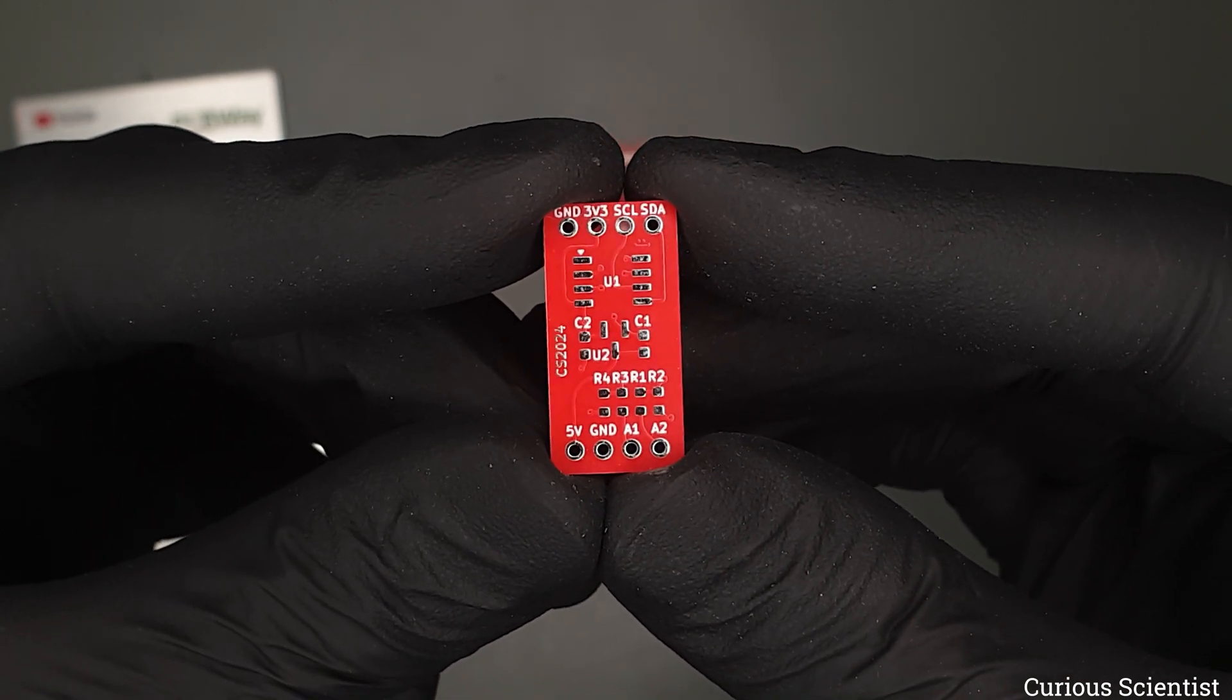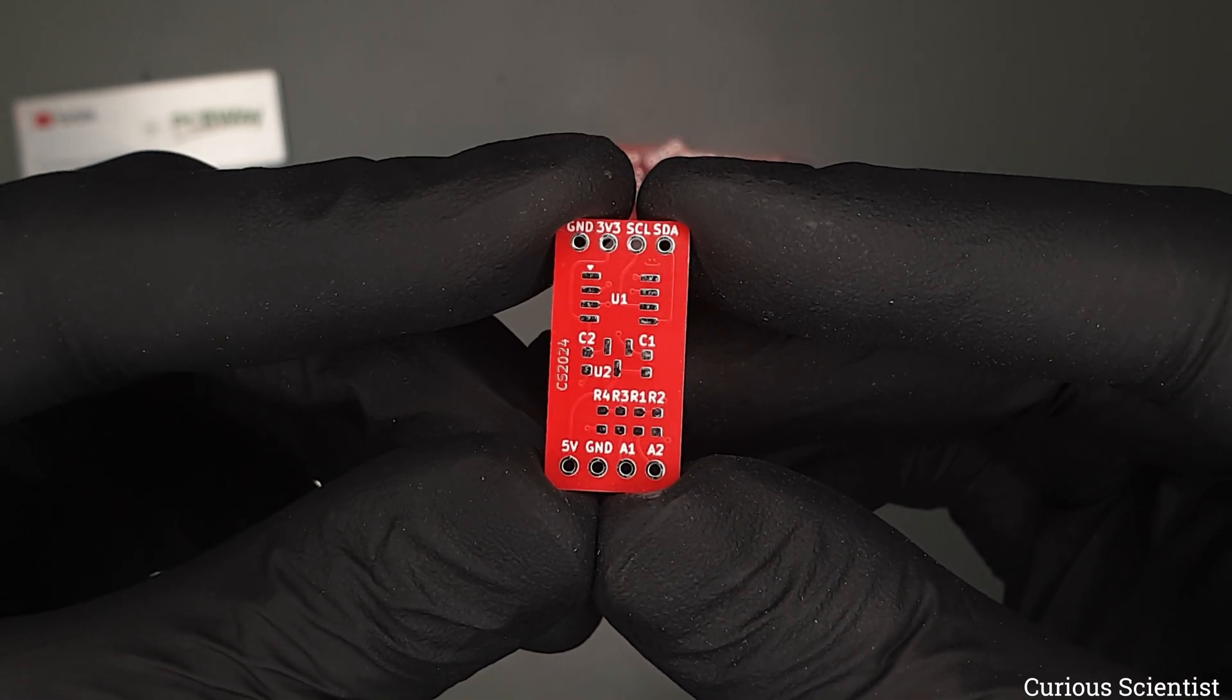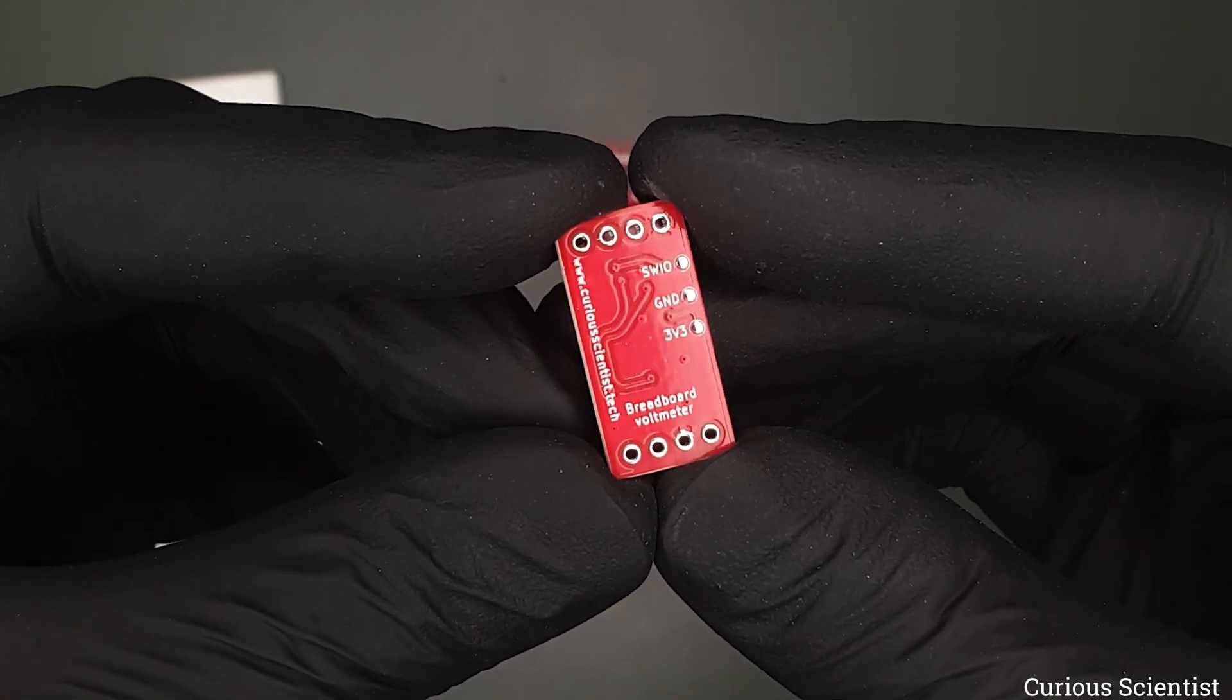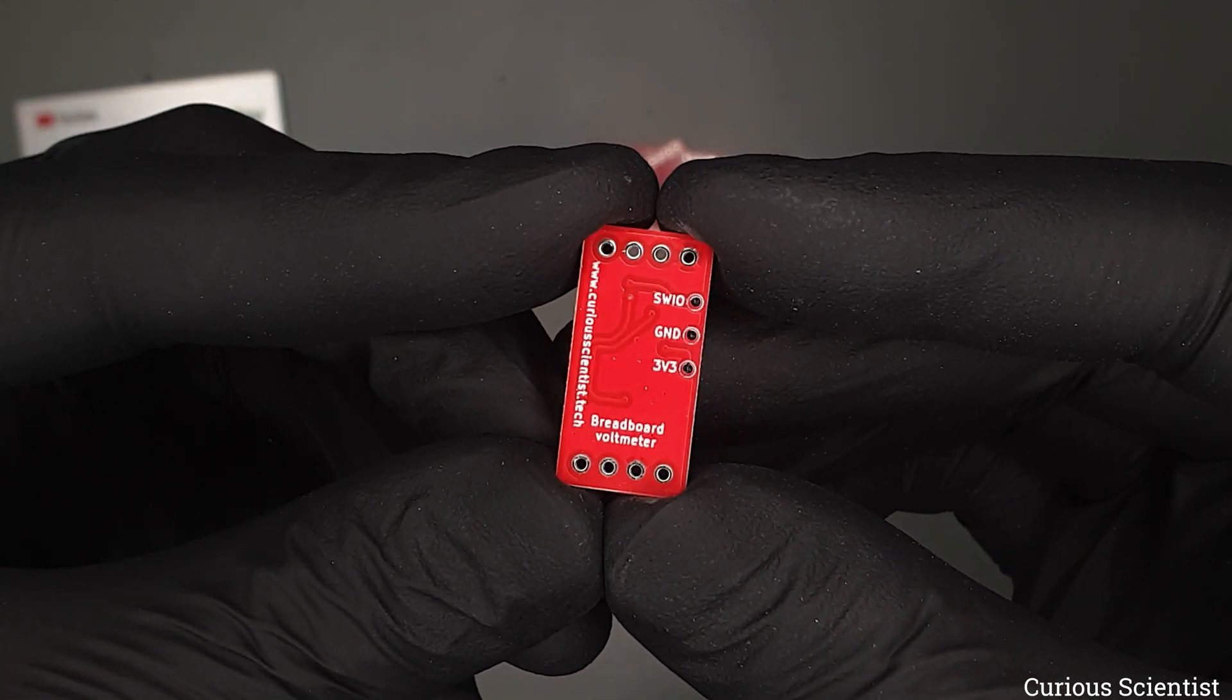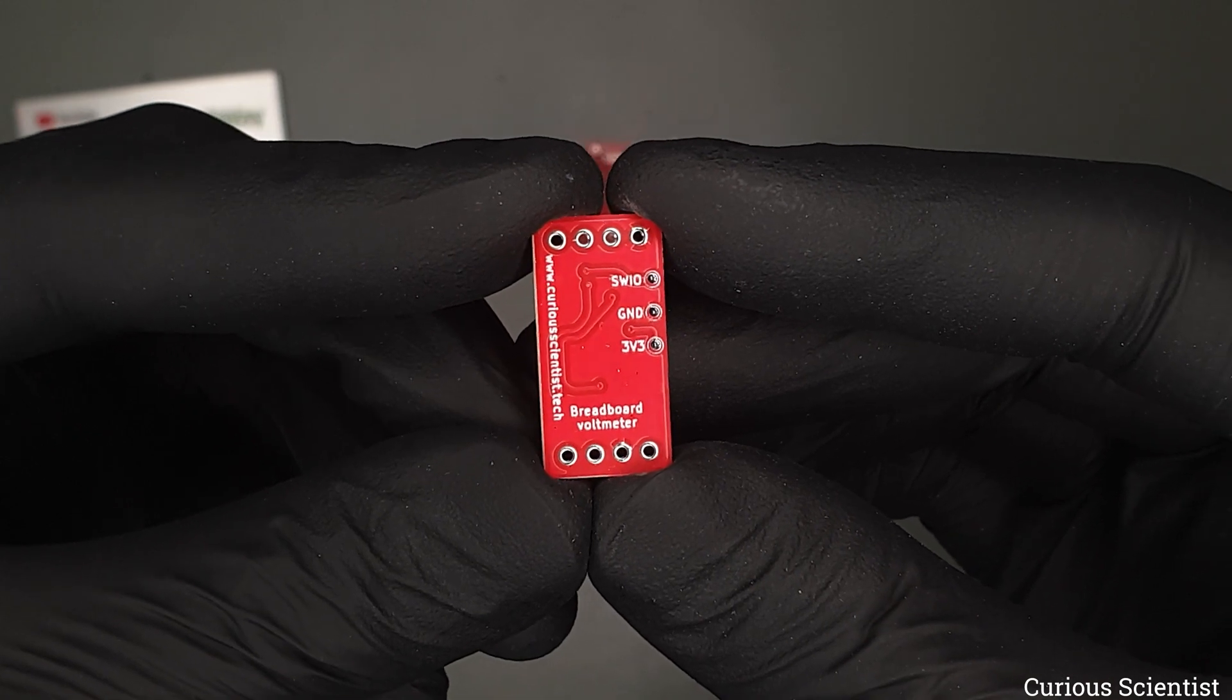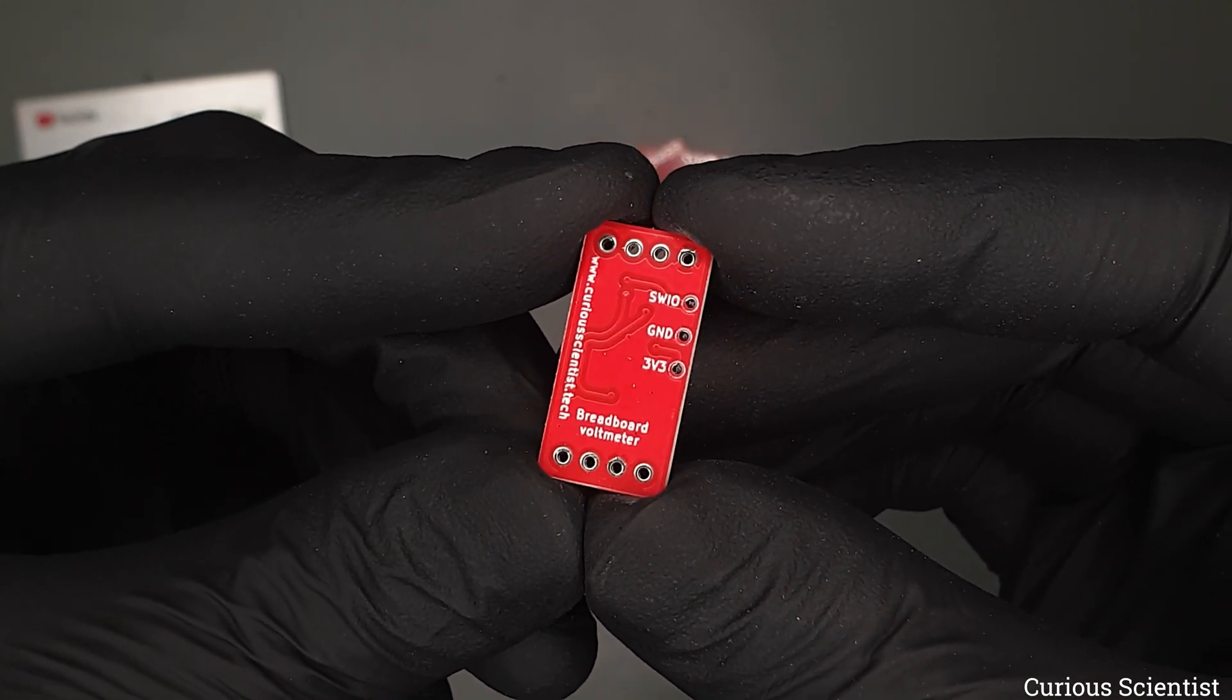This time I went for a red PCB with white silkscreen color, just to have a bit of variety in the colors of my PCBs. The front side will accommodate all the surface mounted components and the back side is used for some information, such as my website and the purpose of the PCB, but it also contains three tabs that can be used for programming the microcontroller.